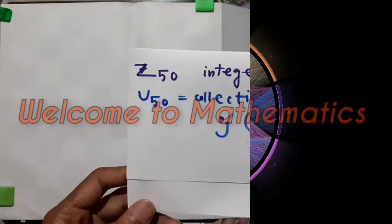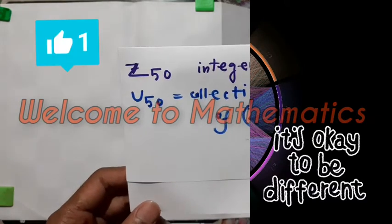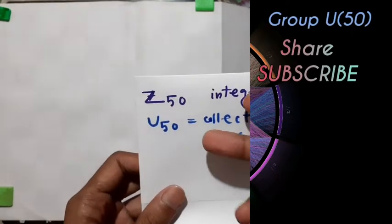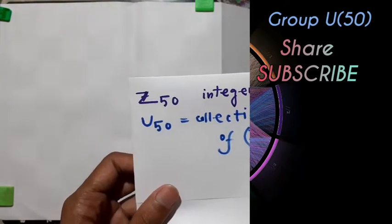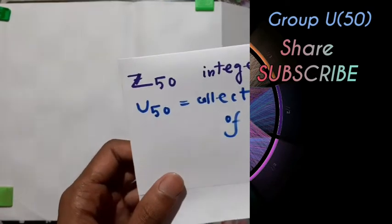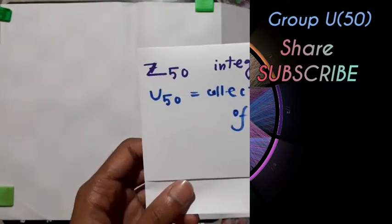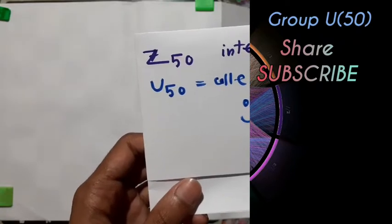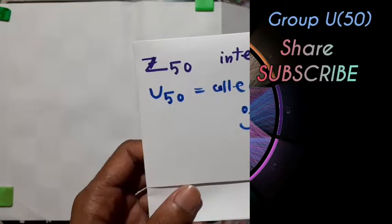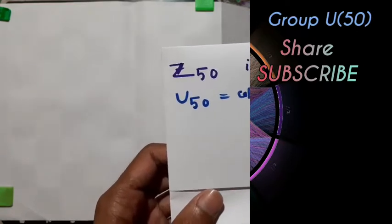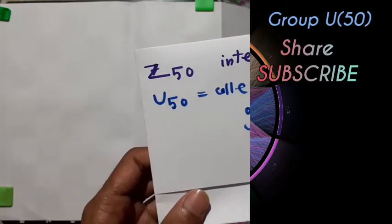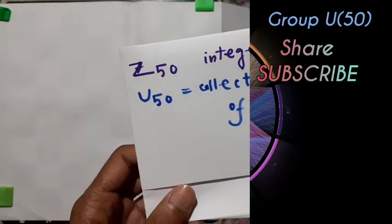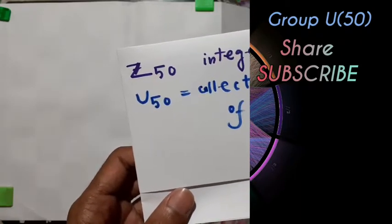Hello friends and welcome to mathematics. Today's topic is all about Z50 and U50, and the order of elements of this group. Z50 is the integers modulo 50, meaning there are 50 elements. U50 is the collection of all units of Z50. Note that Z50 with multiplication is a commutative monoid. We know that 33 belongs to U50 because GCD(50, 33) = 1, and we need to find the order of the element 33-bar.